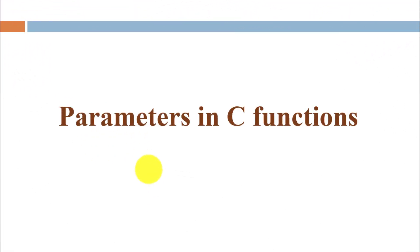Hello friends. In this series of C programming, in the previous video we discussed functions and some example programs. Now in this video we are going to continue the same discussion on functions. Here we are going to discuss what are the types of parameters used in a function, or what are the function parameters.